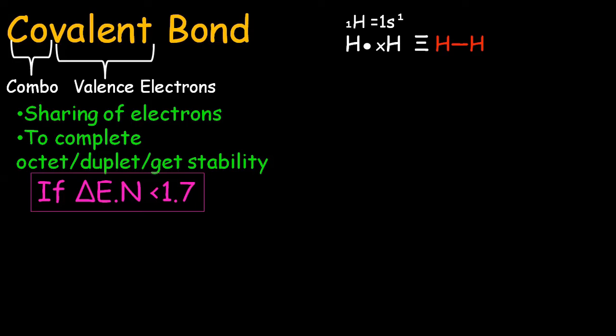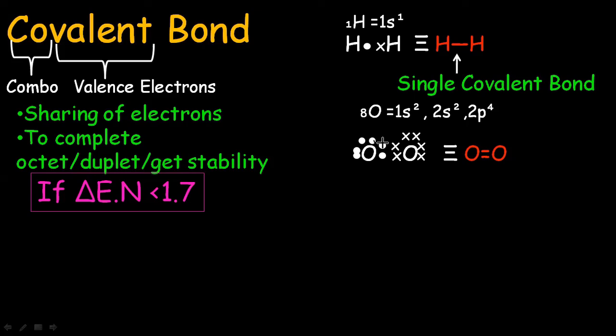H2 has single covalent bond. For oxygen, it is always in the form of O2. It is two electrons away from completing its octet. So both oxygens share their two, two electrons with each other. And by doing so, they complete their octet.